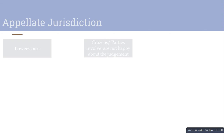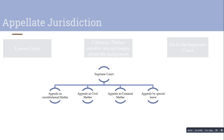Appellate jurisdiction applies when there is a lower court whose parties are not happy with the judgment. Due to their grievances they can go to the Supreme Court. The Supreme Court can hear four types of appeals: appeal in a constitutional matter, appeal in a civil matter, appeal in a criminal matter, and appeal by special leave.